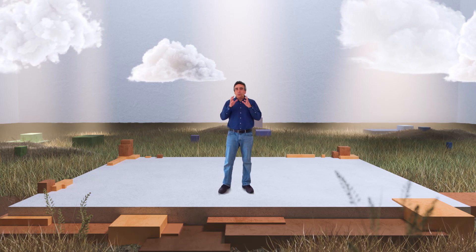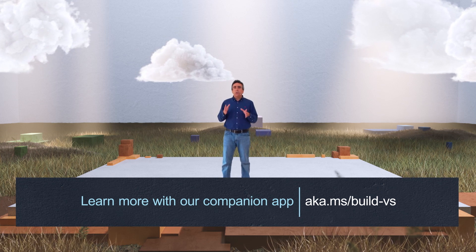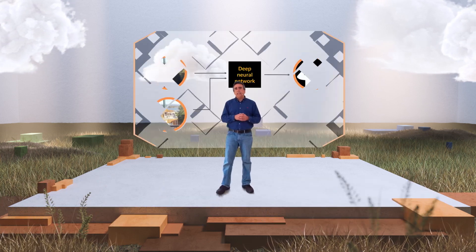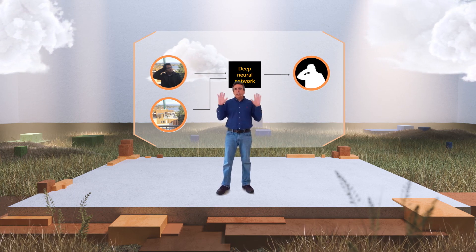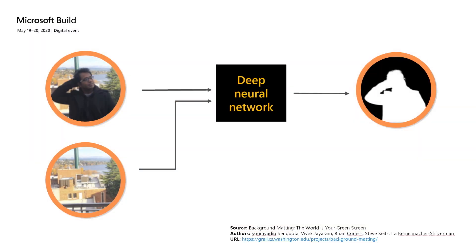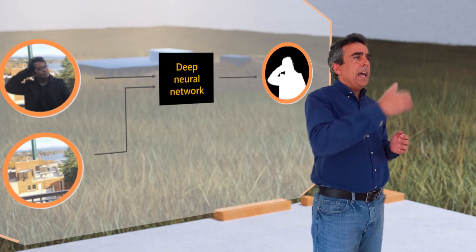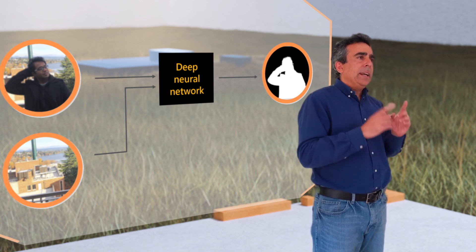I know that if you are a developer, you want to know all the details, so let me share some of those details with you. This AI model is based on the work from the University of Washington. They recently published a paper where their researchers developed an AI model that does that magic. In that AI model, it is taking two video inputs. The first one is the background — I need to record the background without the person on it for the AI model to work. The second one is the real video, the one with the person speaking on it. The output of that model is the transparency mask that you saw before, but it has some issues.